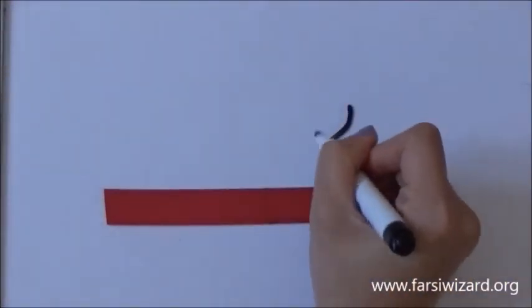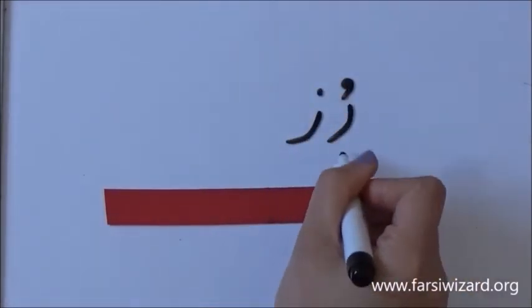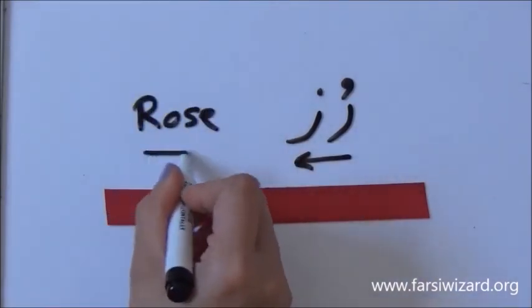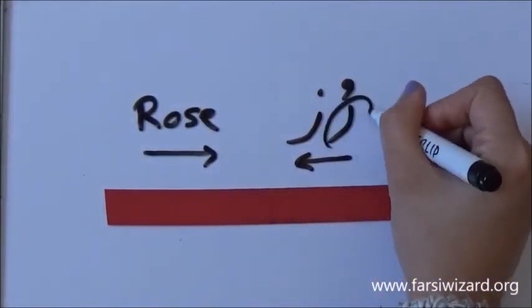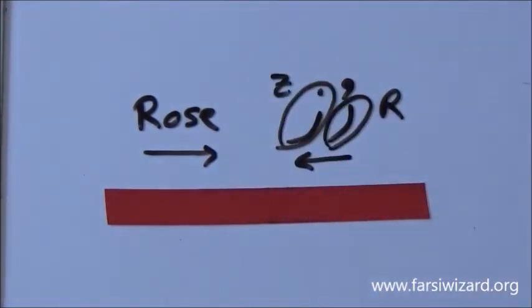So for now just focus on actually identifying the letters. The rules of word formation will be explained separately in another video. Okay. Here we have another word again. Right to left. ROSE. This is your R and this is your Z.